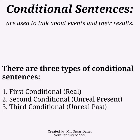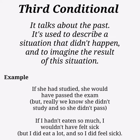Conditional sentences are used to talk about events and their results. There are three types of conditional sentences: first conditional, second conditional, and third conditional. The third conditional talks about the past. It's used to describe a situation that didn't happen and to imagine the result of it.